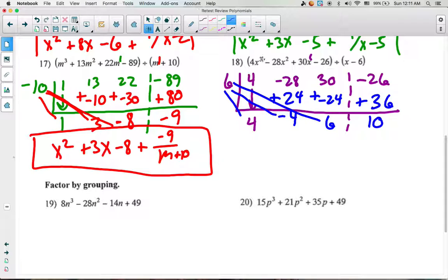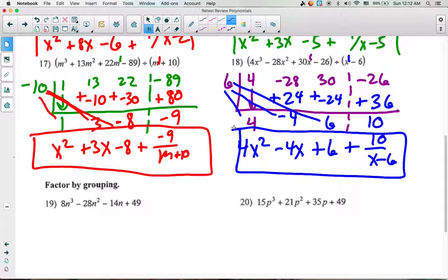And it was an x cubed and an x to the first. So 3 minus 1 is 2. It'll be 4x squared minus 4x plus 6. And then we'll add the remainder of 10 over x minus 6 on the end. And that is your solution. Thank you.